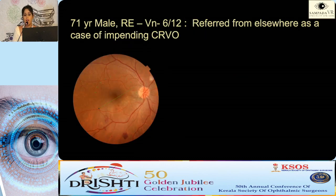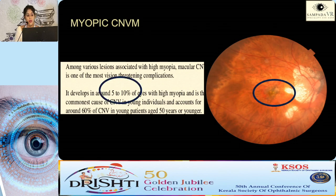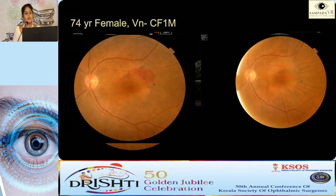This case was referred as impending CRVO, but in the inferior part there is a large subretinal fluid — this ended up being PCV. Myopic CNVM: it's not only lattice degeneration you should look for; always examine the center of the macula under high magnification, as 5-10% of eyes with high myopia can develop myopic CNVM. Look for subtle bleeding points or small SRF during every 6-12 month review. This hemorrhagic PED case turned out to be PCV, and post-Tilla injection the patient improved to 6/9.